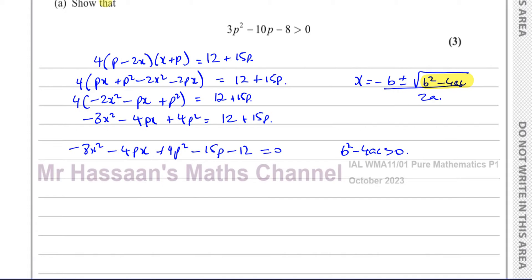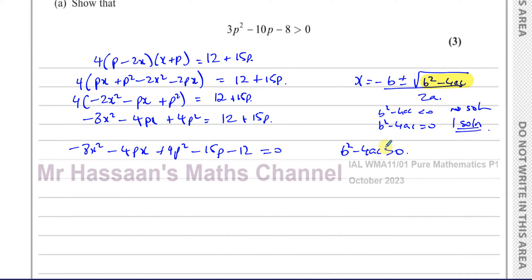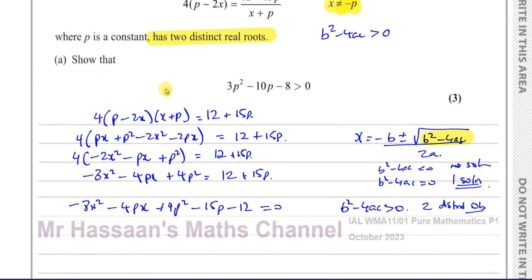If b² minus 4ac is less than zero there are no solutions, because you'd be taking the square root of a negative number. If b² minus 4ac equals zero, you get exactly one solution — a repeated root, equal to minus b over 2a. And if b² minus 4ac is greater than zero, you have two separate distinct solutions — which is the case we need to consider.